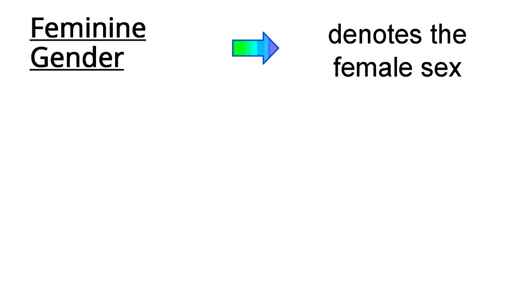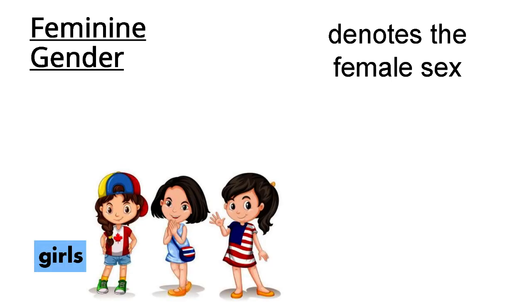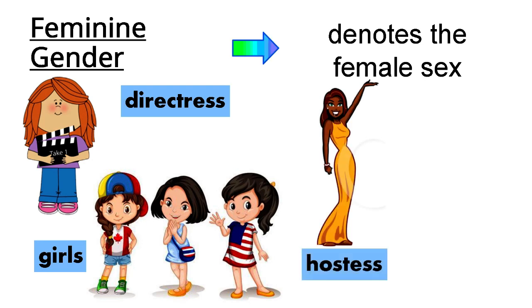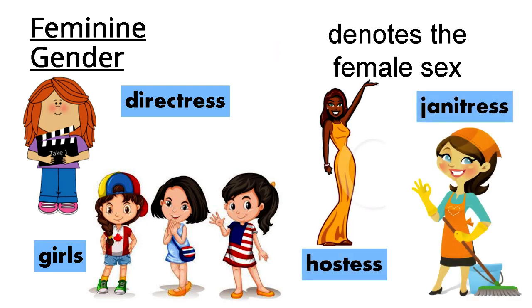The feminine gender denotes the female sex. Examples: girls, directress, hostess, janitor.